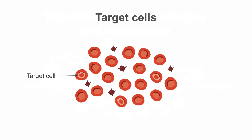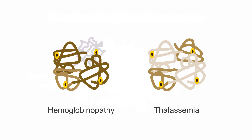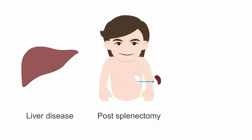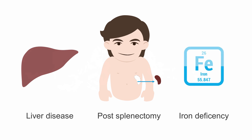Target cells may sometimes be seen in the peripheral smear, and these are formed as a consequence of the presence of excess membrane in relation to the volume of cytoplasm. They may be seen in hemoglobinopathies or thalassemias. Target cells may also be seen in liver disease, especially obstructive liver disease, post-splenectomy states, and in patients with iron deficiency.